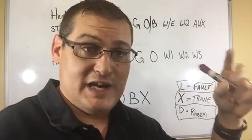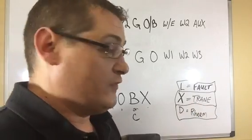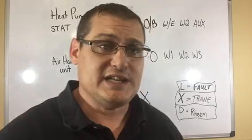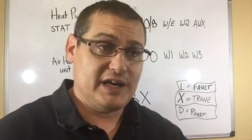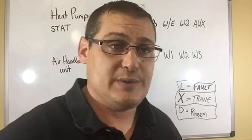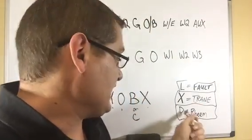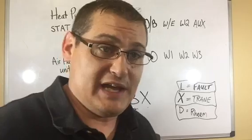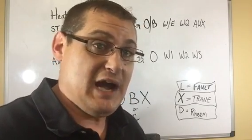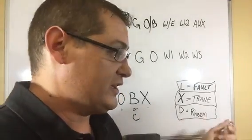Then we have the X terminal for Train. Train uses X anytime the unit goes into defrost. We need the backup heat running, so it sends a signal into the air handler to turn on the strip heat. That's what X does. In Rheem, they call it D, and it does the same thing. When it goes into defrost, it sends power to the backup heat to power while the units in defrost. It doesn't matter what they call it. They could call it Q for all we care, as long as we know what it does.